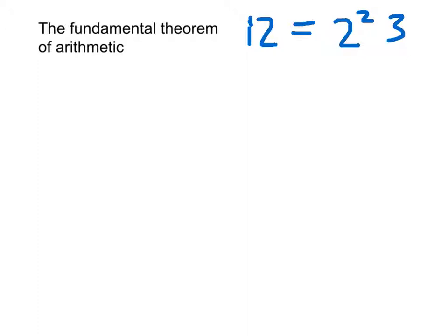Now from this we get a way of working out common divisors of two numbers, and this is called the Euclidean Algorithm.